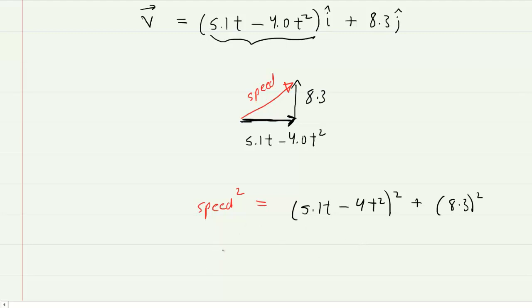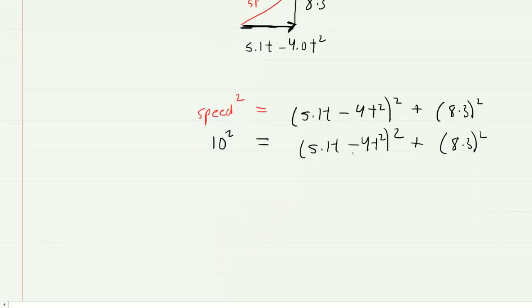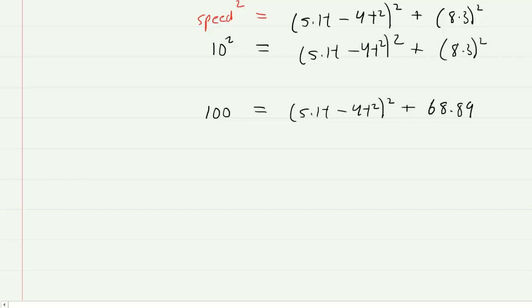And we can see from Pythagorean theorem that the speed squared would equal the 5.1t minus 4t squared squared plus the 8.3 squared. This is basically c squared equals a squared plus b squared. The question noted that the speed is 10 meters per second, so we can fill in 10 on the left-hand side. One way that might make sense is to first square the left-hand side. So this would become 100. And then it will be useful to also square this 8.3, and so that's going to be 68.89. Then let's subtract 68.89 from both sides. So we'll end up with 31.11 equals 5.1t minus 4t squared squared. It probably is easier just to take the square root of both sides. So if you take the square root of 31.11, you will get about 5.58.